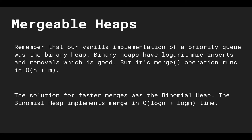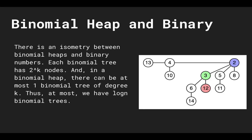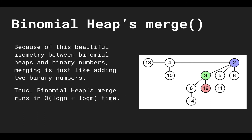We wanted to do this faster, so the solution for faster merges was the binomial heap. The binomial heap implements merge in O(log n + log m) time. Recall the isometry between binomial heaps and binary arithmetic: each binomial tree has 2^k nodes, and in a binomial heap there can be at most one binomial tree of degree k, so at most we have log n binomial trees. Because of this isometry, merging is just like adding two binary numbers, giving O(log n + log m) merge time.